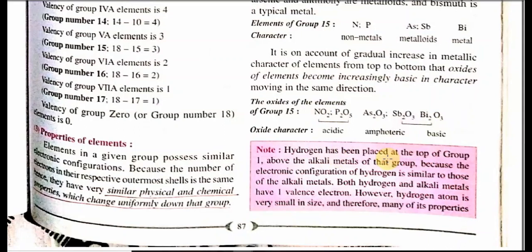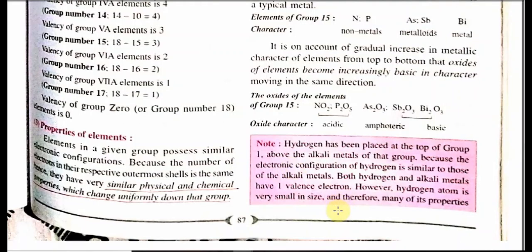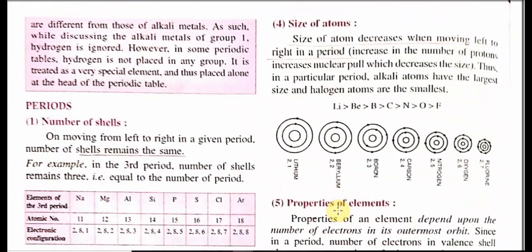Hydrogen has been placed at the top of group 1 above alkali metals because the electronic configuration of hydrogen is similar to that of alkali metals — both hydrogen and alkali metals have one electron. But hydrogen atom is very small in size, so many of its properties differ from those of alkali metals. Therefore, the position of hydrogen in group 1 is often ignored. However, in some periodic tables, hydrogen is not placed in any group and is treated as a special element, placed alone at the head of the periodic table.